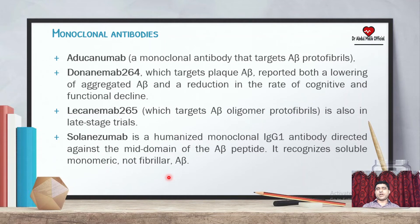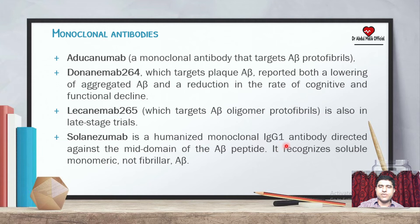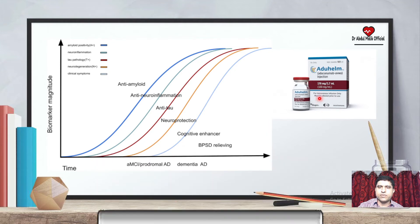This class of monoclonal antibodies is the latest discovery and is most important. Aducanumab is basically a monoclonal antibody that targets amyloid-beta protofibrils. It recognizes soluble, monomeric, non-fibrillar amyloid-beta, which represents important targets of the immune system. Aducanumab has recently entered the market.